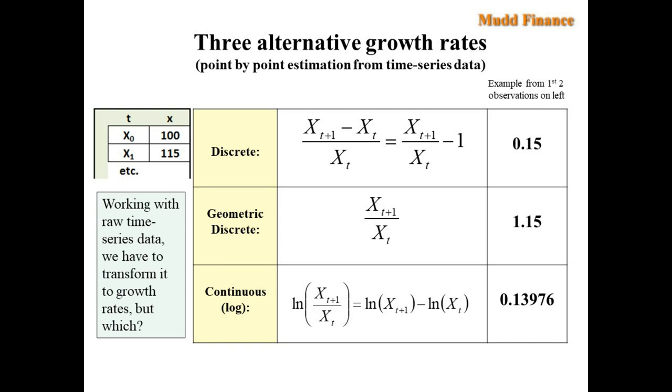The geometric discrete growth rate simply multiplies the new value by the old value and gives us the discrete growth rate plus 1%. But the one we're going to use will be the continuous log growth rate on the bottom, which is equal to the natural log of the newest observation over the original observation, or the difference of those logs, which mathematically ends up being the same. And that will be a smaller number at about 14%, is smaller because this is effectively continuous compounding of the rate of return.